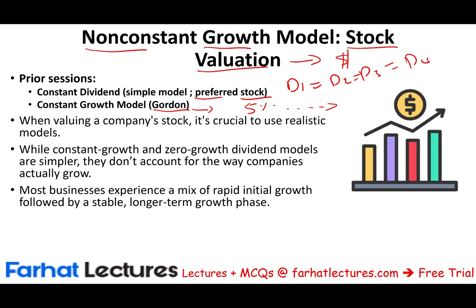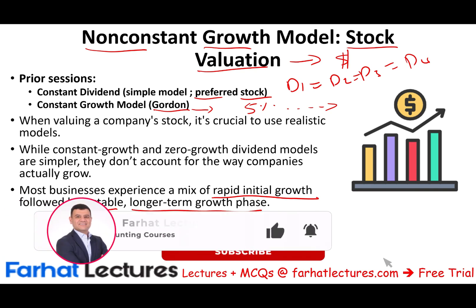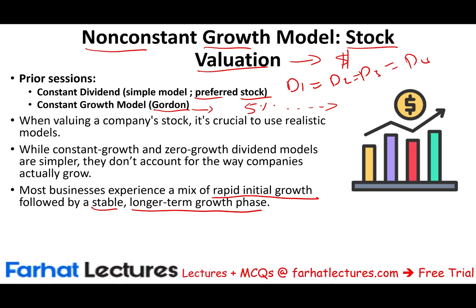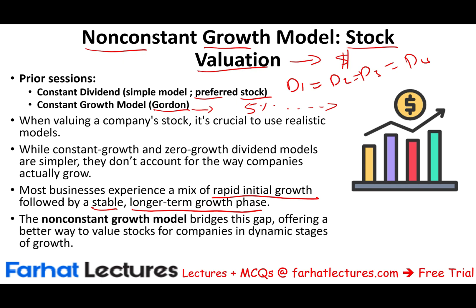While constant growth and zero growth dividend models are simpler, they don't account for the way companies actually grow. In the real world, most businesses experience a mix of rapid initial growth followed by a stable, longer-term growth phase. When you start as a company and you have a great product, you would just rocket at the beginning, keep going up until you reach a peak. Once you reach that peak, you will start to flatten and grow at a specific rate — usually lower than the initial rate. So the non-constant growth model bridges this gap, offering a better way to value stocks for companies in dynamic stages of growth.